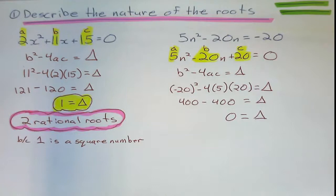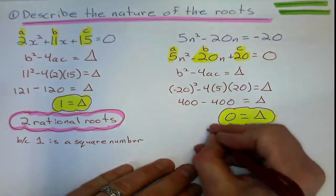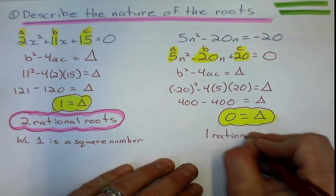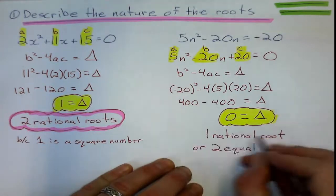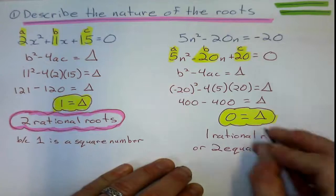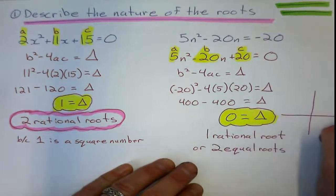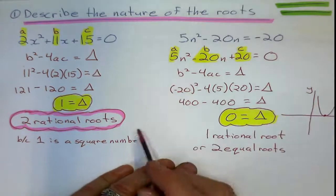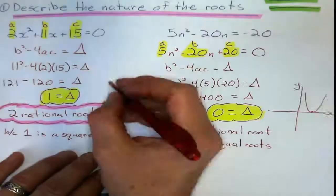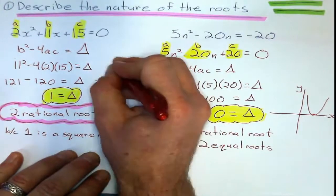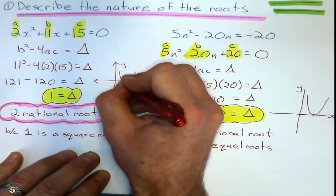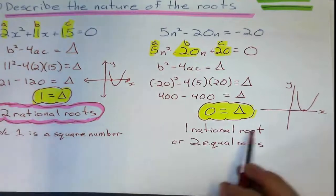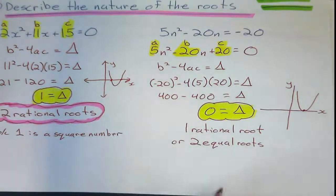So what does 0 tell us? If our discriminant is equal to 0, that means we have one rational root, or we can say two equal roots. And what this means is this quadratic is just going to be sitting somewhere on the x-axis. And this guy right here is going to have two x-intercepts. These graphs are not accurate, just to demonstrate the point of the roots. One root, one x-intercept, two roots, two x-intercepts.